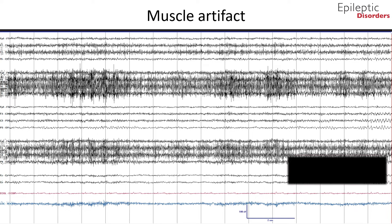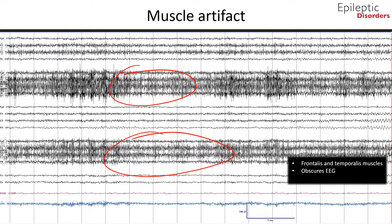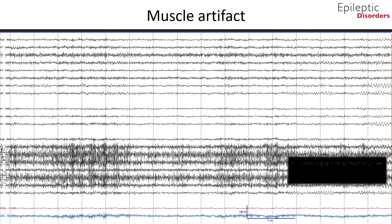Muscle artifact is another commonly observed artifact on EEG. It is high frequency activity, noted to be very spiky, but too fast to be an epileptic discharge. It is commonly noted during the awake state and may obscure critical portions of the recording, such as in this EEG bipolar montage where there is obscuration of the right hemispheric leads circled in red. The frontalis and temporalis muscles are the principal site of myogenic artifact. Frontalis muscles become most involved with forced eye closure and photic stimulation. Temporalis muscles may become active with jaw clenching, chewing, or bruxism, appearing as bursts of fast activity. In the average montage, you can see high frequency muscle artifact obscuring the EEG on the right hemispheric chains.